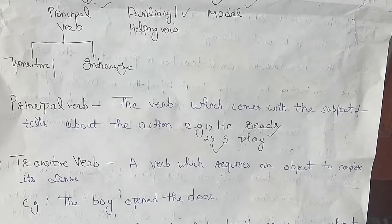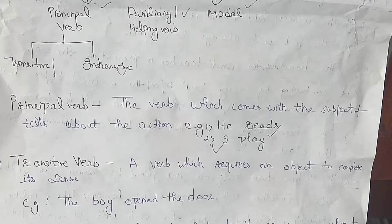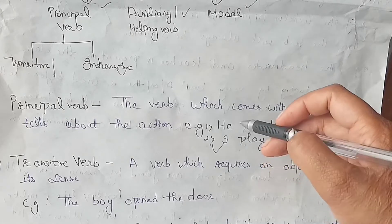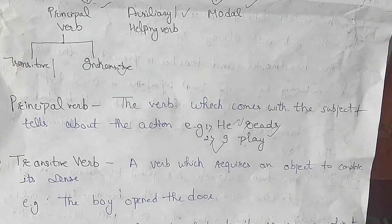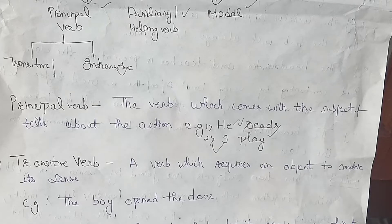For example, 'He reads.' Here 'he' is the subject, and 'reads' is the verb. Another example: 'I play.' The verb 'play' tells us who plays — I play. So, the principal verb tells the action of the subject.